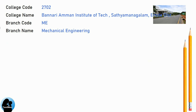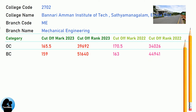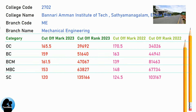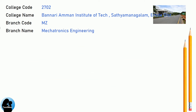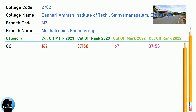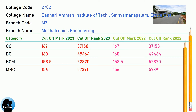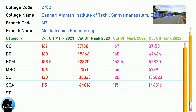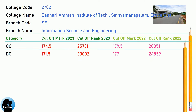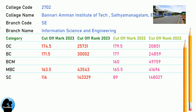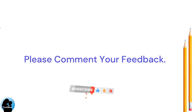Cut-off marks for Mechanical Engineering, covering multiple category rows. Cut-off marks for Information Science and Engineering.